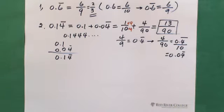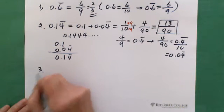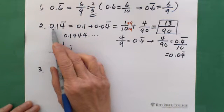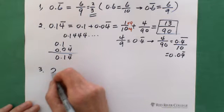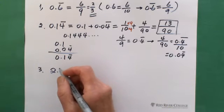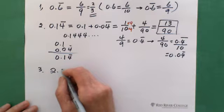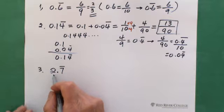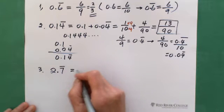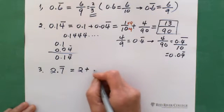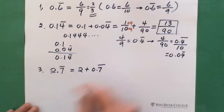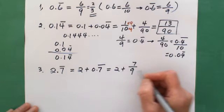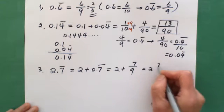For the third question, if the first part is a whole number — say 2.7 repeating — the 2 is a whole number. You separate it: 2 plus 0.7 repeating. And 0.7 repeating equals 7 over 9, so you get the answer 2 and 7 over 9.